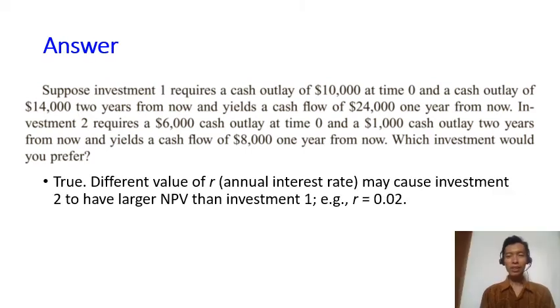The answer is yes, it's true. Different value of r may cause investment two to have larger NPV than investment one. For example, if you plug in r equals zero point zero two, you may get the result that the NPV for investment two is larger than investment one.